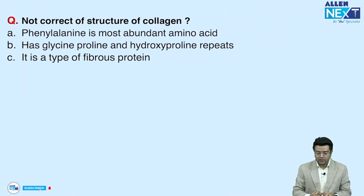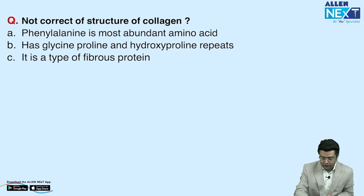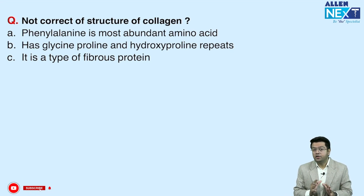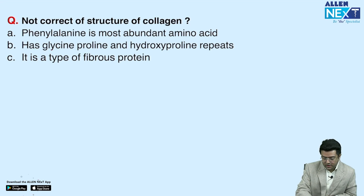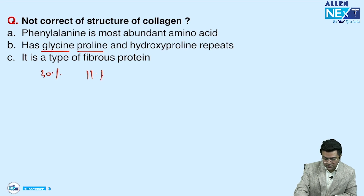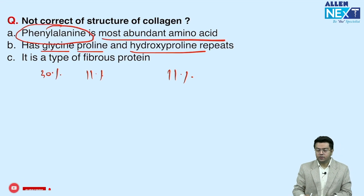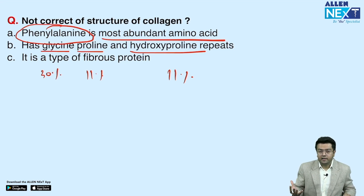Next was a question on the structure of collagen. Collagen is a protein with a triple helix secondary structure. The most common amino acid is glycine at almost 30%, then proline at almost 11%, and hydroxyproline at almost 11%. There is no phenylalanine as the most abundant — it is actually a very large amino acid, and bulkier amino acids destabilize the triple helix.